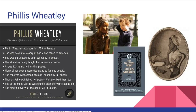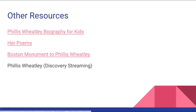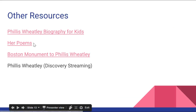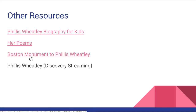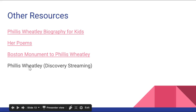Phyllis Wheatley is another one of the people from the TEKS. She's probably going to be the most difficult for your students to research, and her writing will likely be the least accessible to them since her poetry was written in the late 1700s to 1800s. She was born in Senegal, Africa, was sold into slavery at age seven, and taken to America. Resources include a kid-friendly biography, a link to her poem, a website, information about a monument to Phyllis Wheatley, and a quick video clip about her on Discovery Streaming.